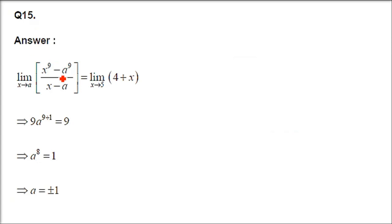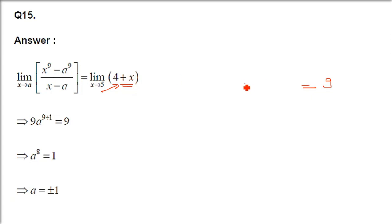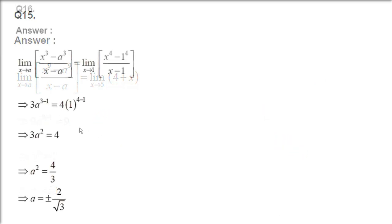Question number 15: limit x tends to a of x to the power 9 minus a to the power 9 by x minus a, equals limit x tends to 5 of 4 plus x. On the right hand side, direct substitution gives 4 plus 5 equals 9. On the left hand side, applying the formula gives 9 times a to the power 8 equals 9. Dividing gives a to the power 8 equals 1, so a equals plus or minus 1.